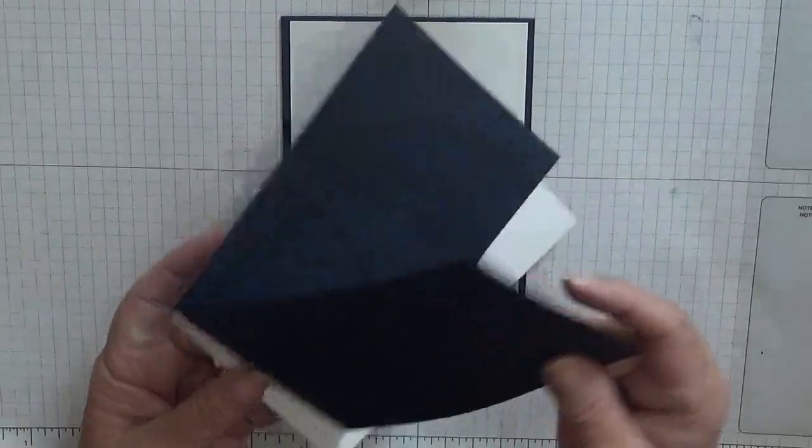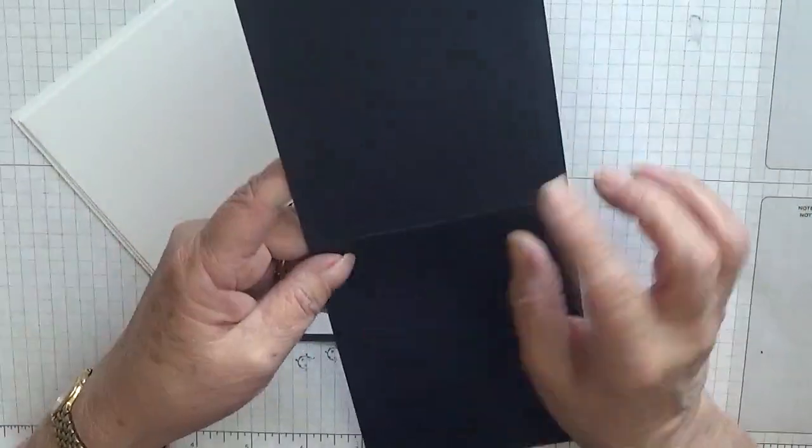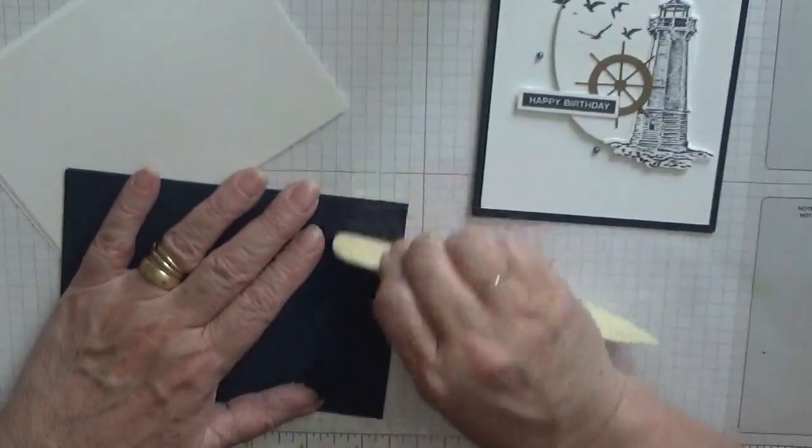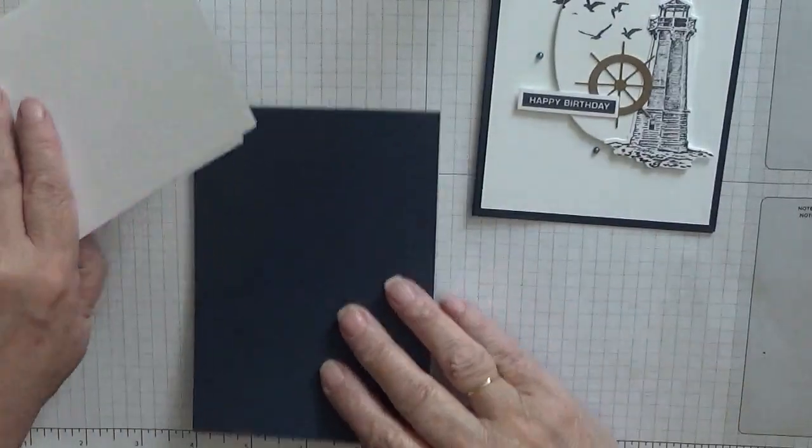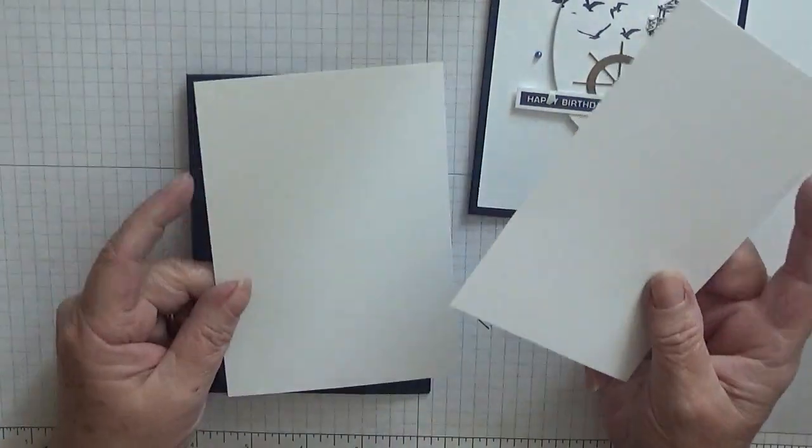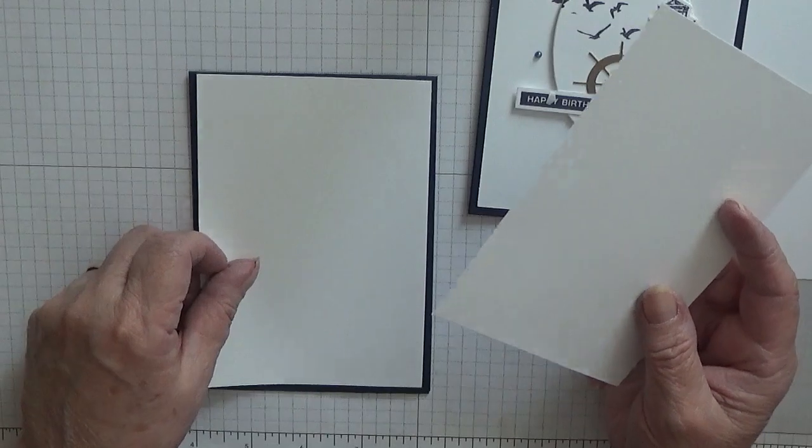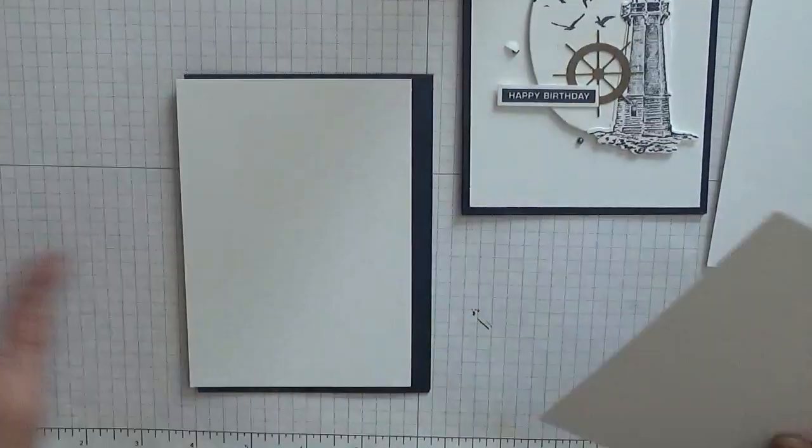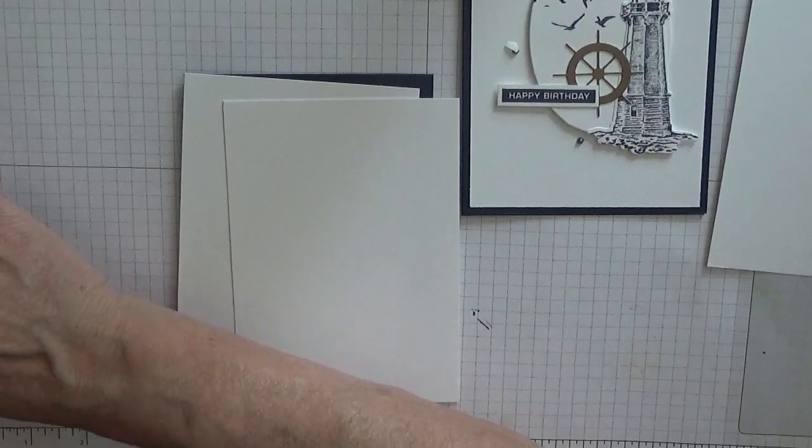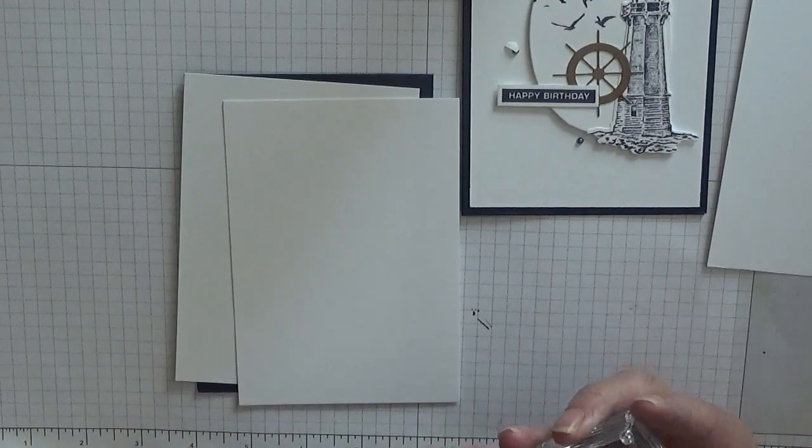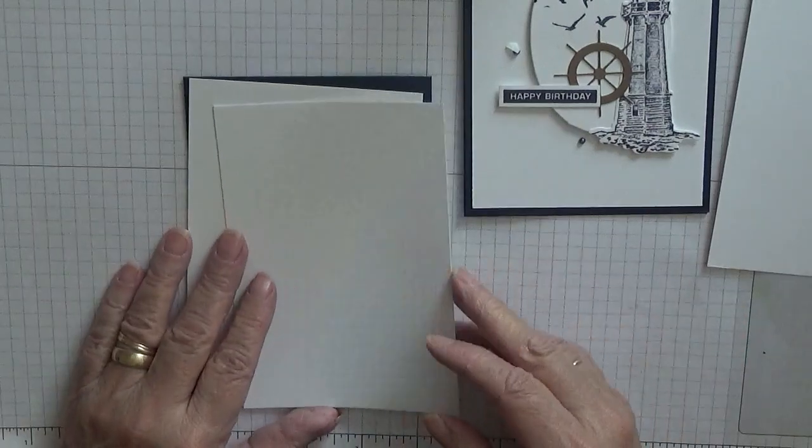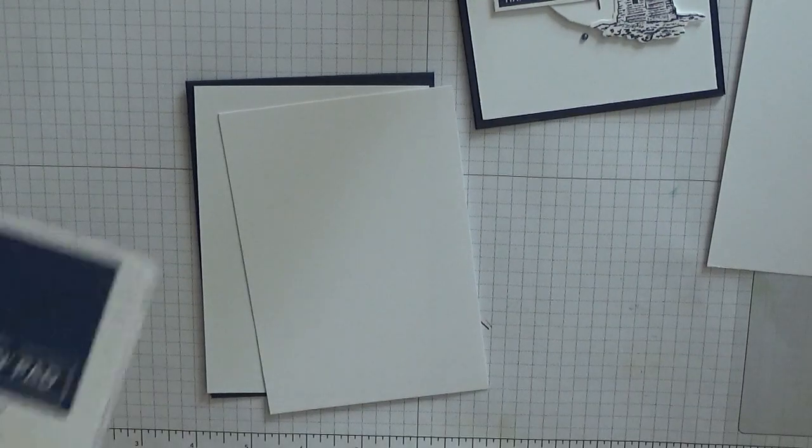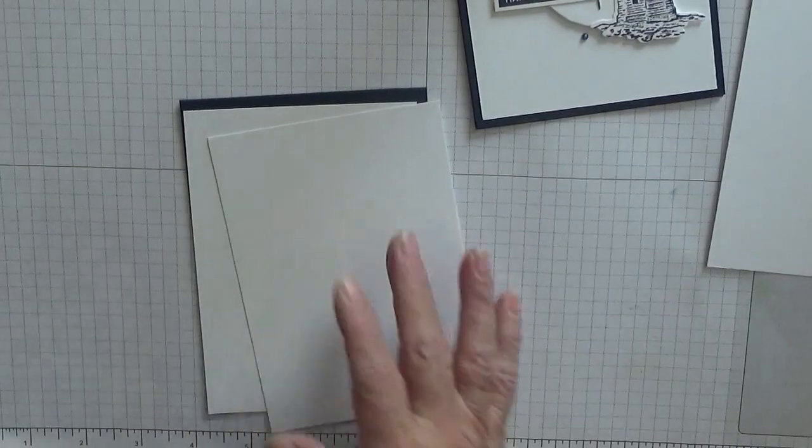To get started we'll need a card base of eleven and three quarters by four and one eighth, scored at five and seven eighths, folded in half and burnished, which I'd already done, and two pieces of white cardstock, one for the front, one for the inside. The only thing I never got out was my Night of Navy ink because it's all stamped in Night of Navy.